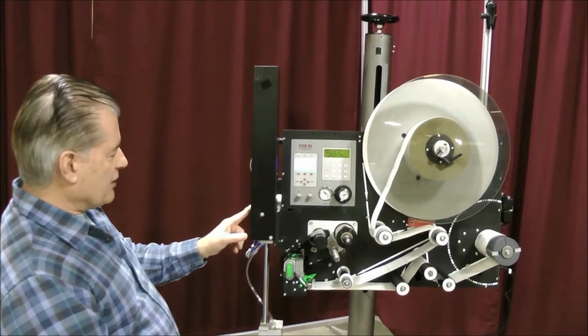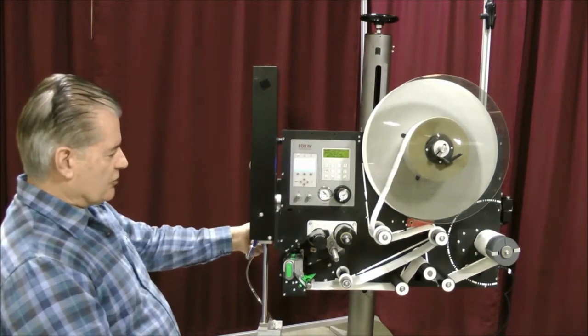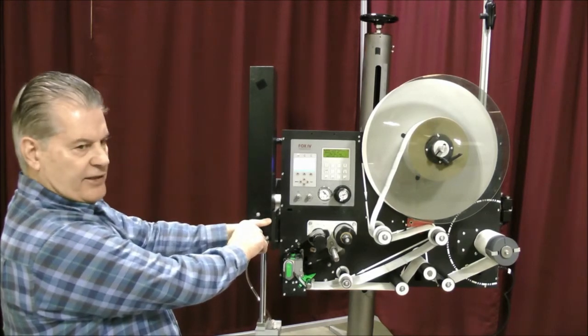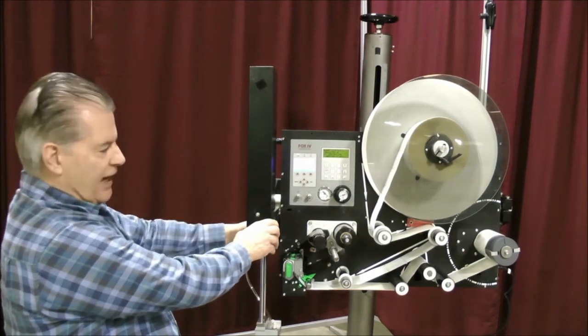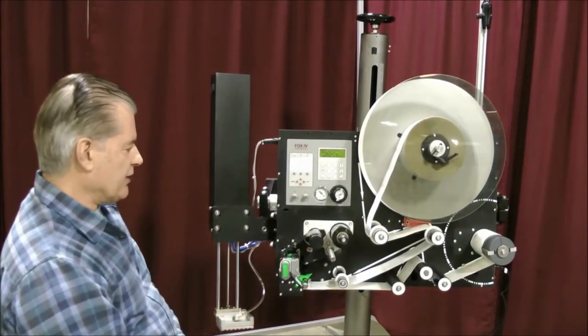First thing you want to do is make sure the unit is powered up. You want to open the cylinder, swing away cylinder. It just makes it easy to get access to the labels and the ribbon. You don't really need to do that, but it just makes it a little easier.